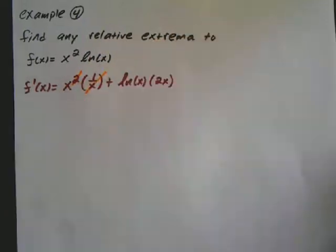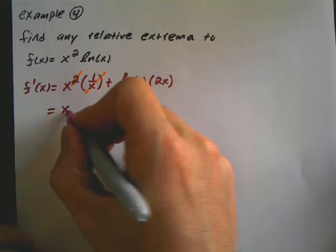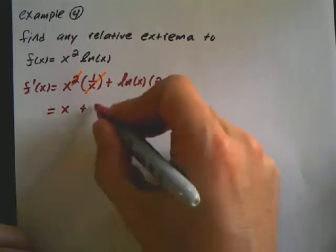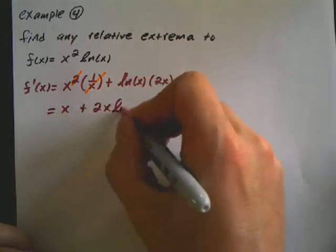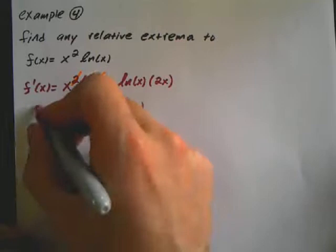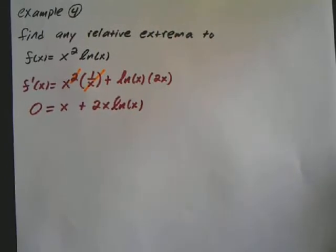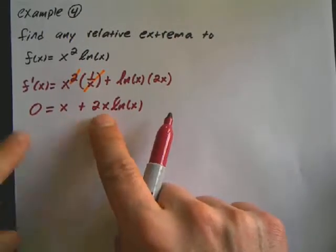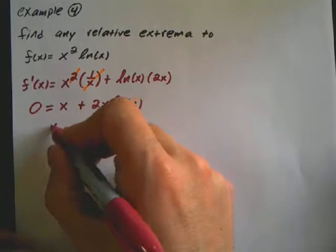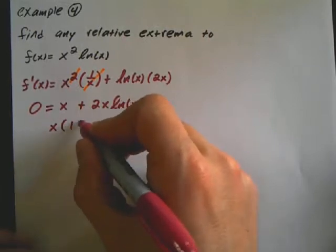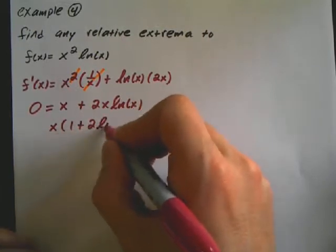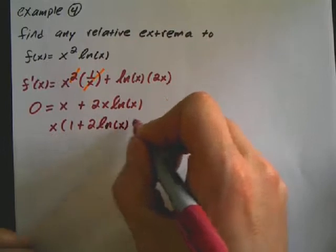And then reducing from here. This reduces completely. So what I have is x plus 2x ln of x. I set my derivative equal to 0 so I want to find the critical points. I have a common term of x that I can factor out.